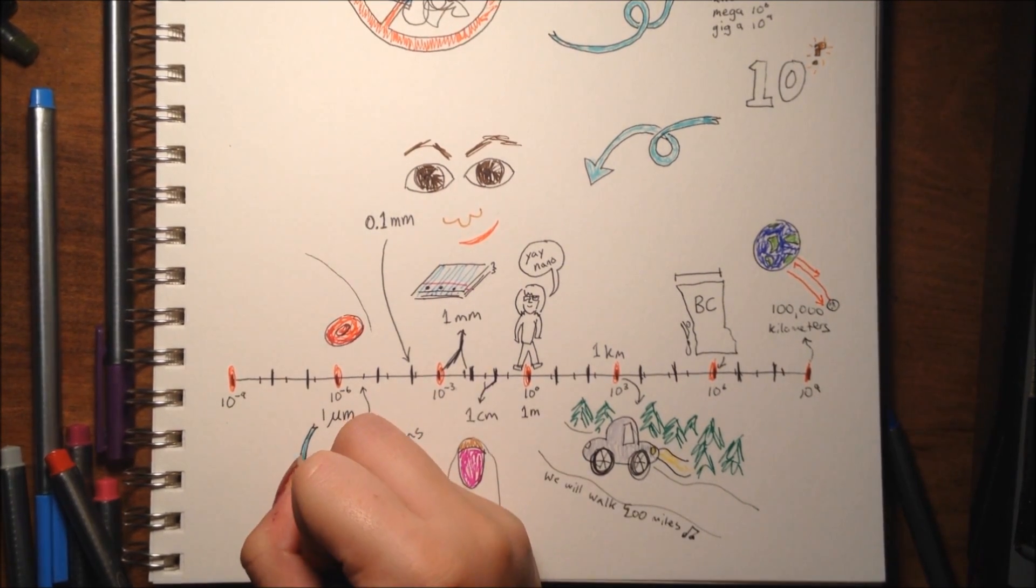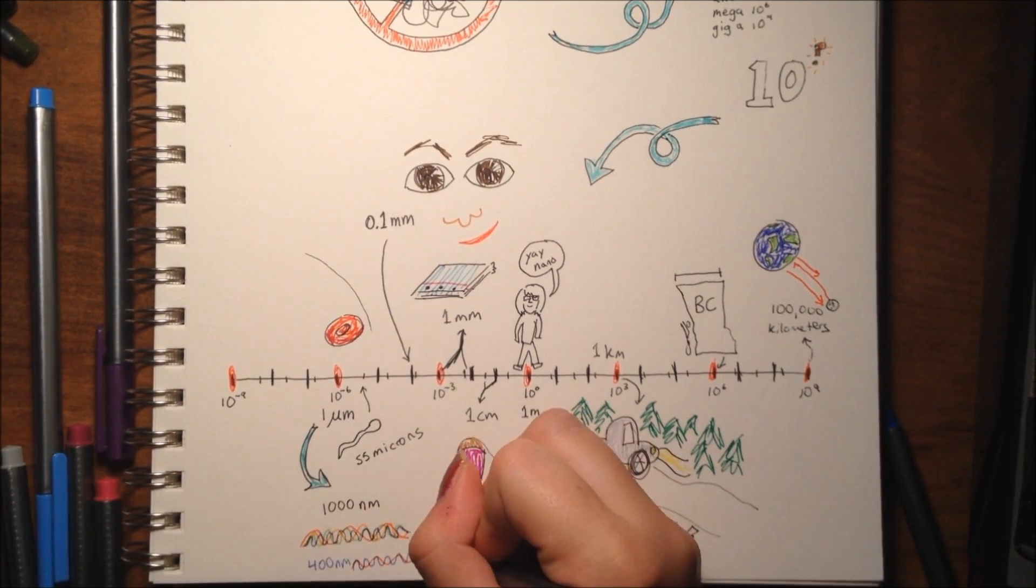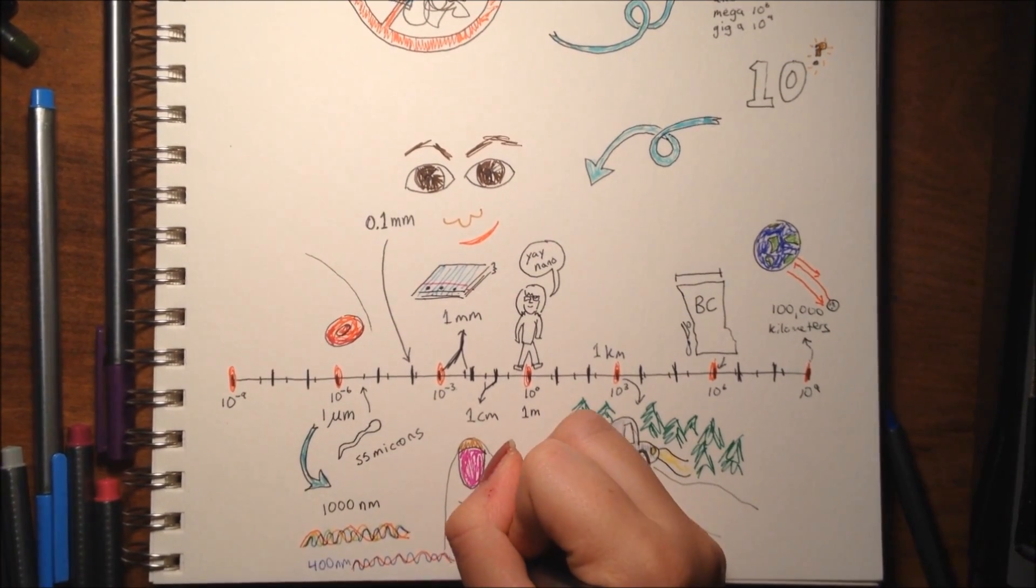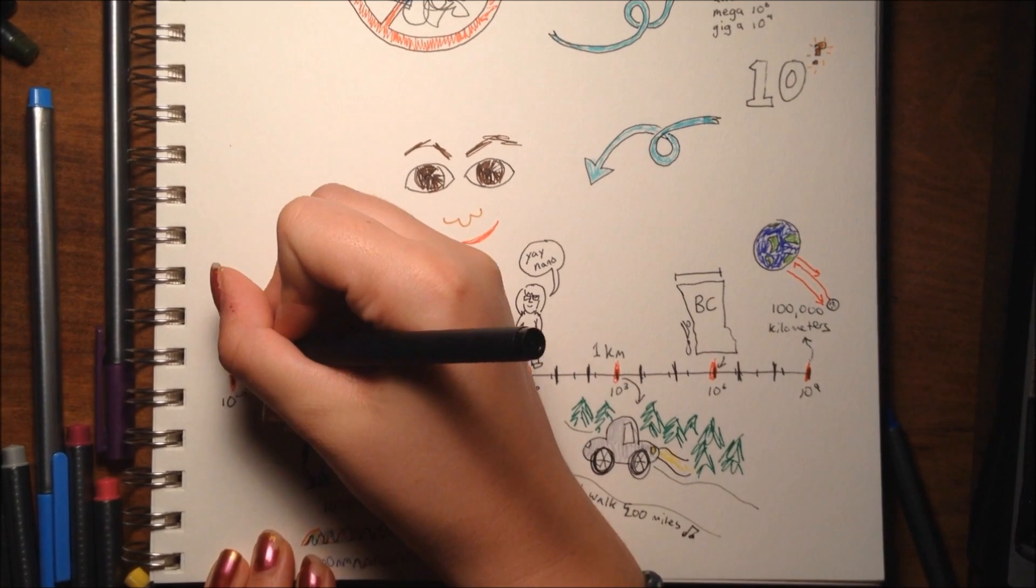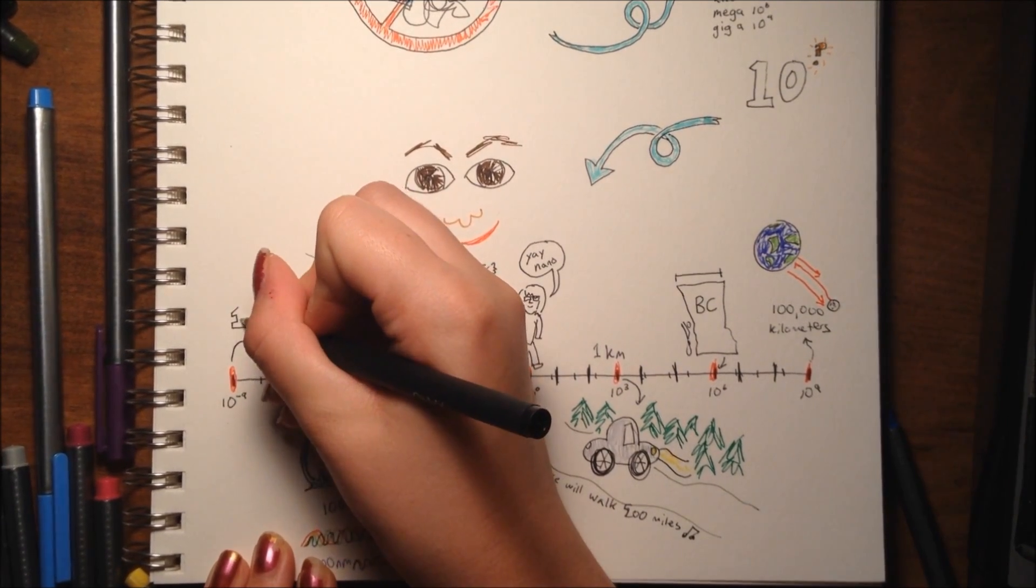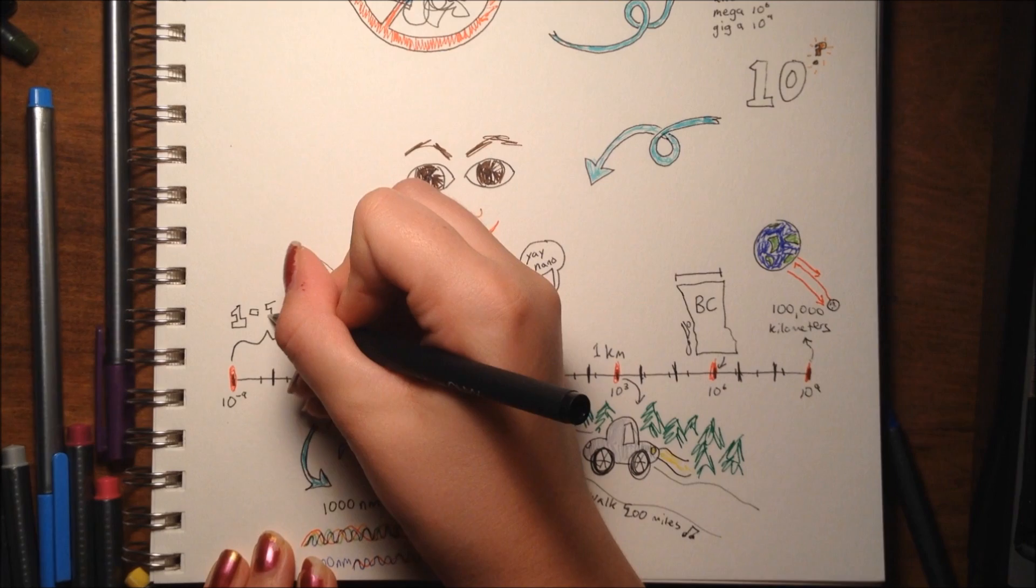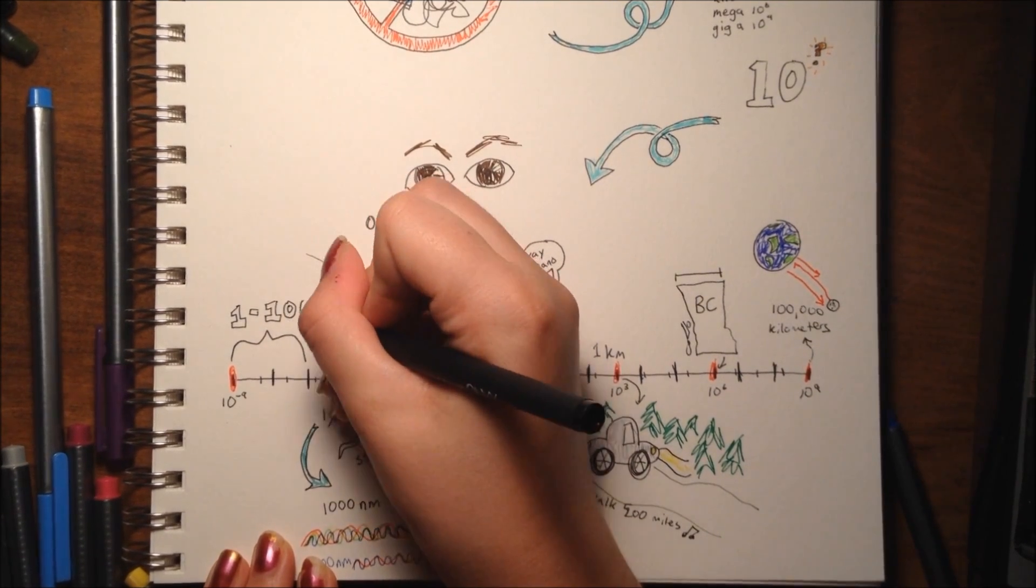This is sort of the range of light, which is from 400 to 700 nanometers. And just under that, from 1 nanometer to 100 nanometers, is the range that nanotechnology deals with.